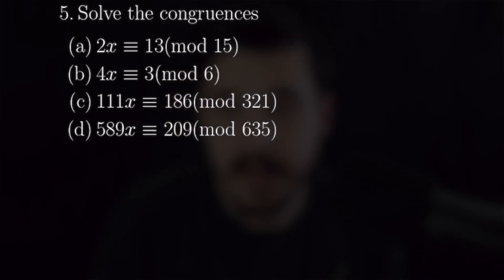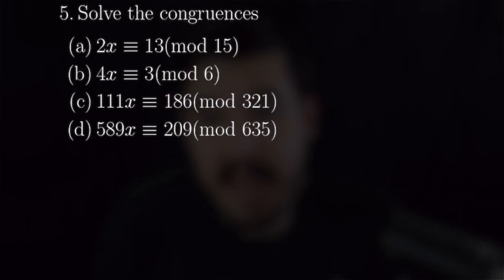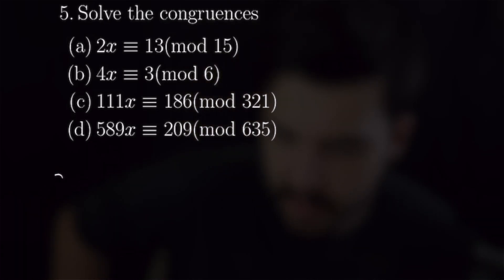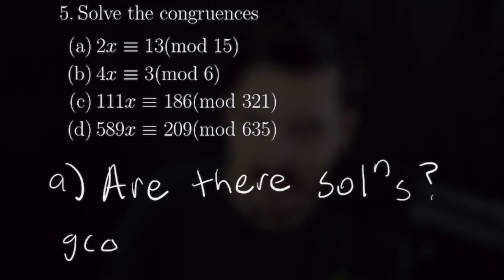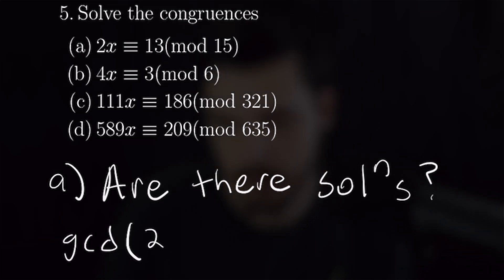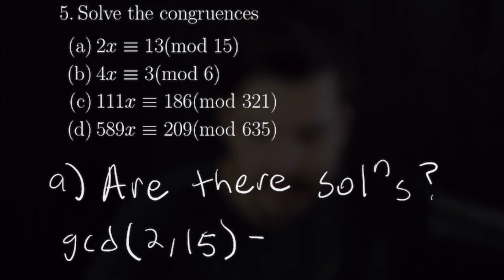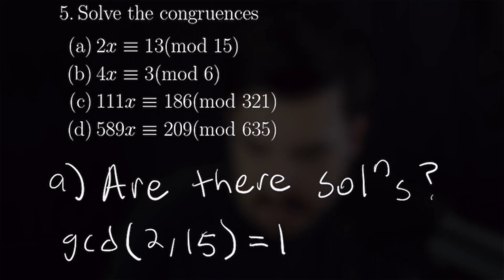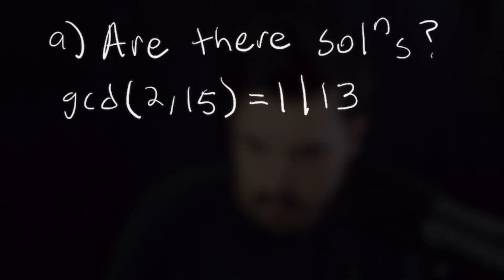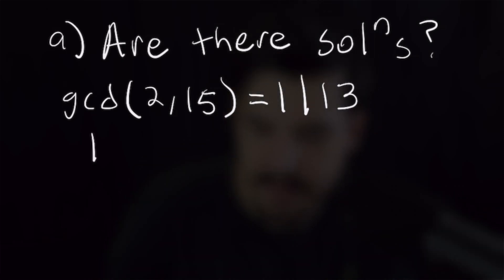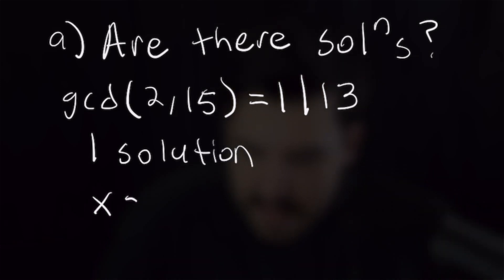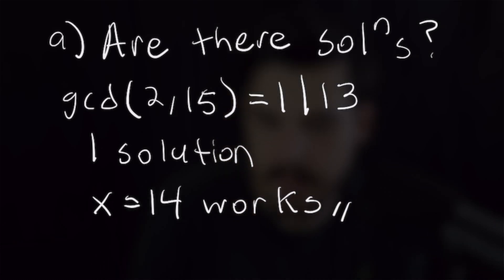For part 5, we solve several linear congruences. For part a, we want to check if 2x ≡ 13 mod 15 has solutions. We compute gcd(2, 15) = 1, and since 1 divides 13, there is exactly one solution. We can see directly that x = 14 works because 2 × 14 = 28 ≡ 13 mod 15.